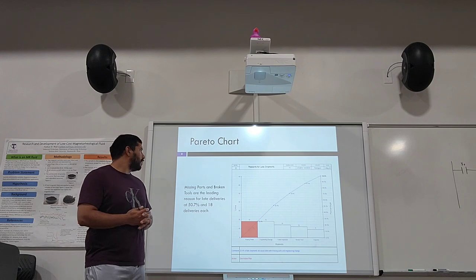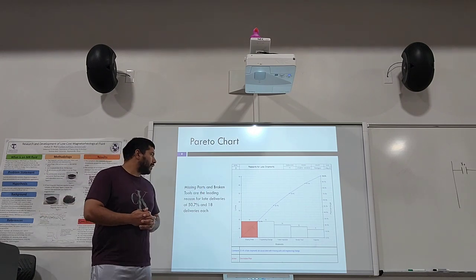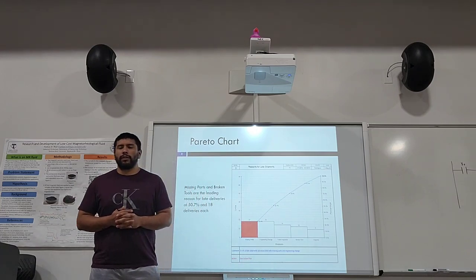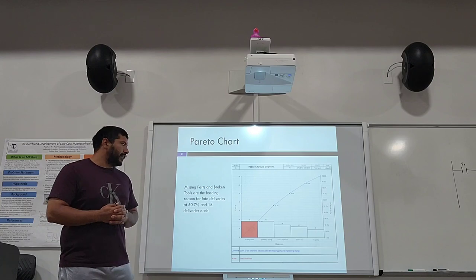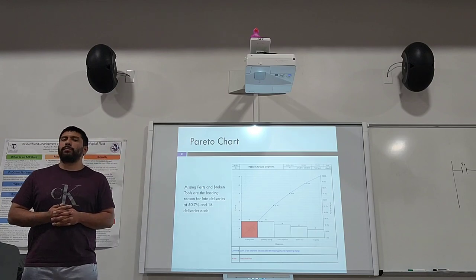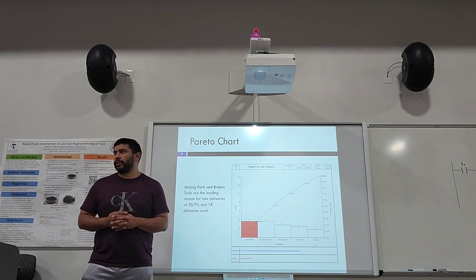In May, because we are still looking at May, we're looking at a sample size of 71, and missing parts and engineering change are the same at 18. That gives us a total of 50.7 percent of late deliveries attributed to these two failures.